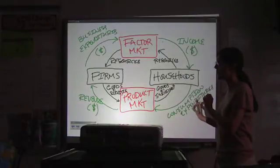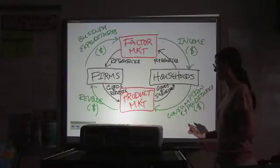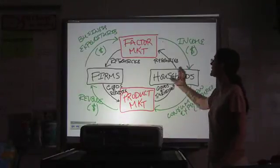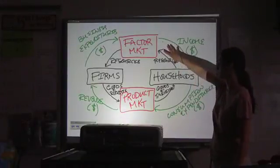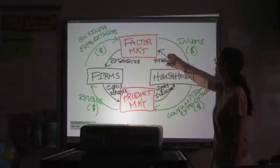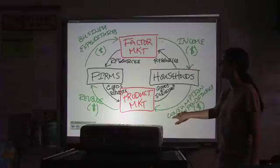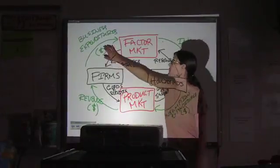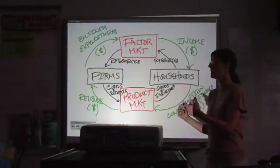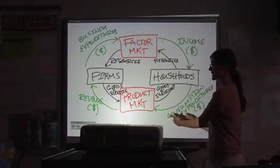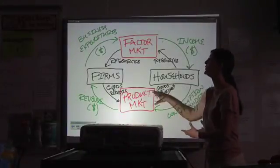Now, this is a lot easier to understand if you take it in pieces. So remember that each pair of arrows represents an exchange. You work, you get paid. You buy stuff, you spend money. The business sells you stuff, they make money, they buy resources, and they pay for them. Each one of those is an exchange that happens through a market.